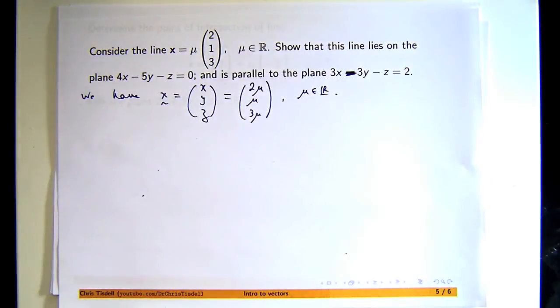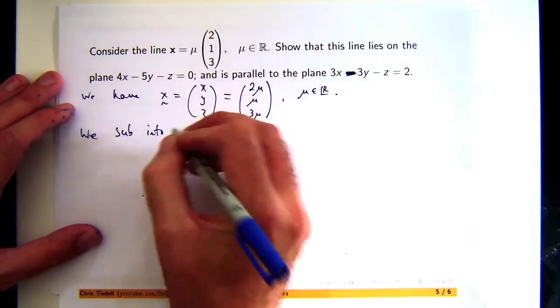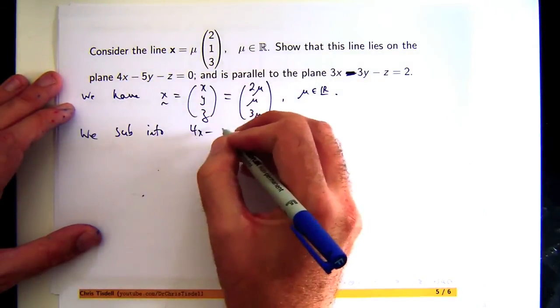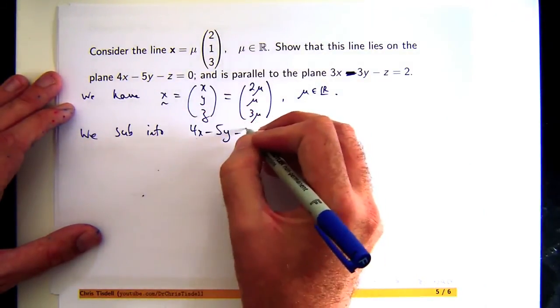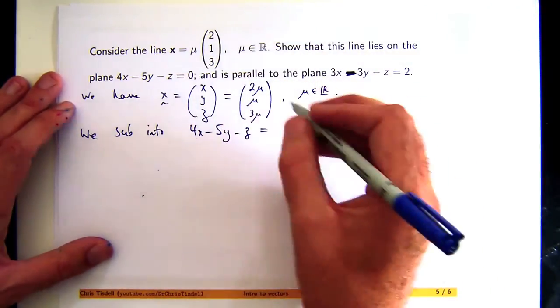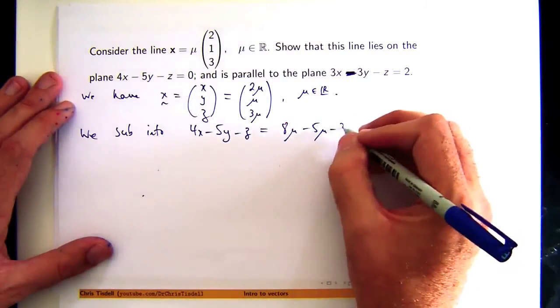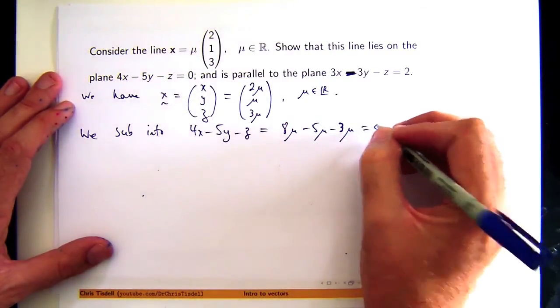Alright, so we substitute into 4x - 5y - z to see, and hopefully it gets 0. So we'll get 8μ - 5μ - 3μ, and that's 0 for all mu.